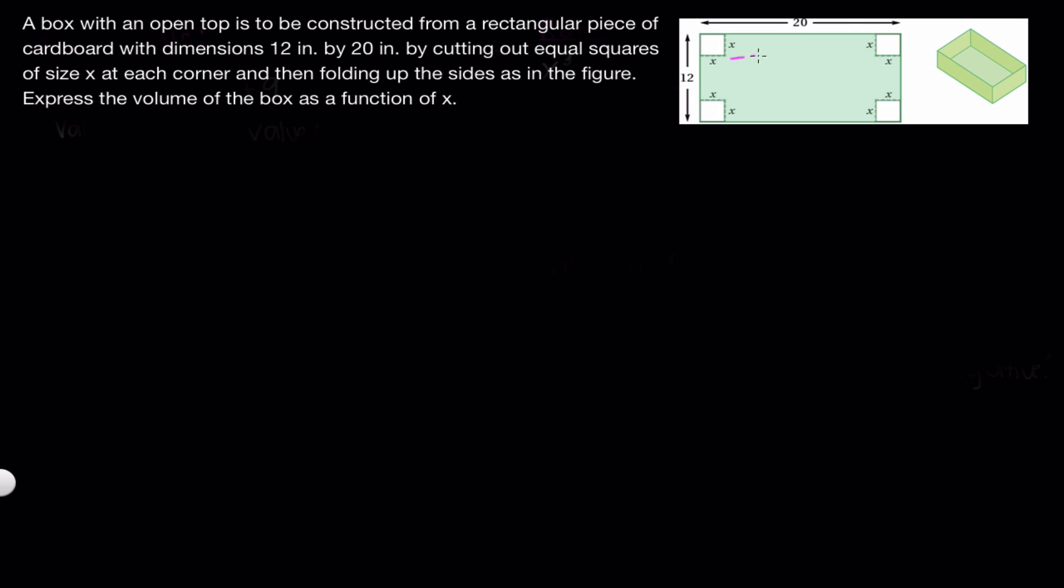So first, to get a layout of this, we can see that this inner rectangle here will be the base of our box. So correlating to the picture, this would be this inner rectangle, and then everything else on the outside will be folded up to give us the sides of our box.